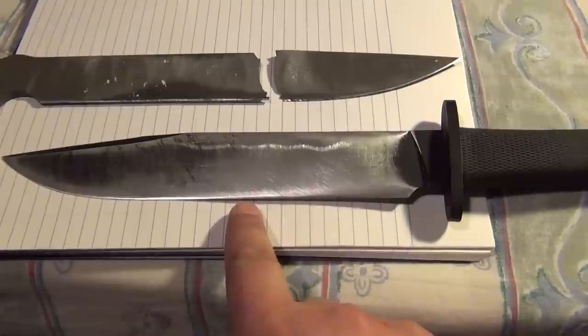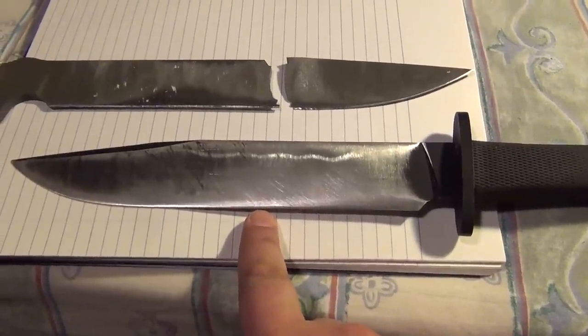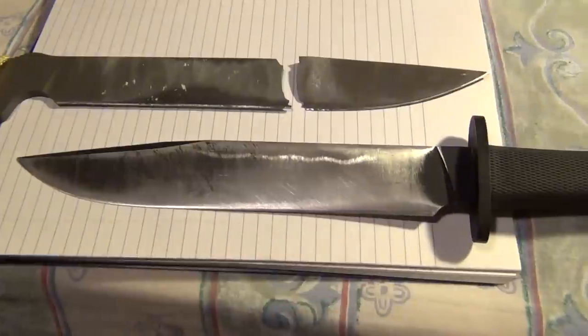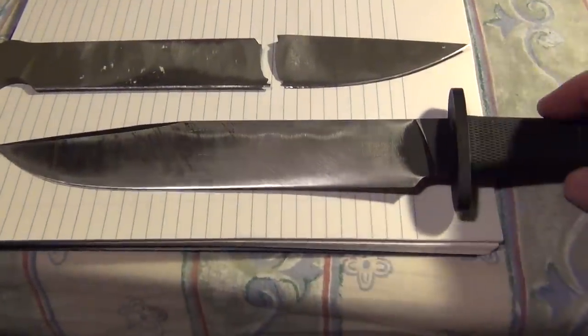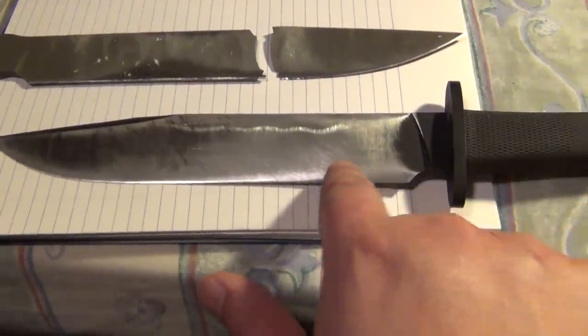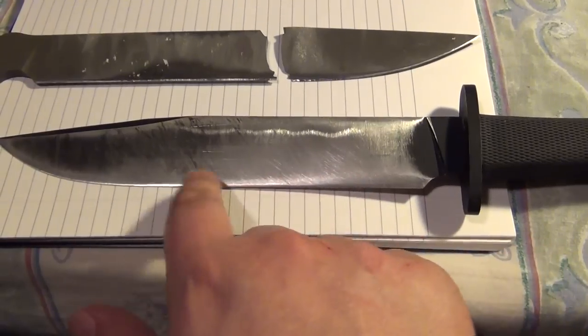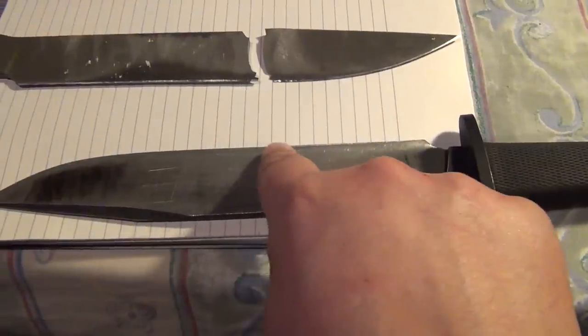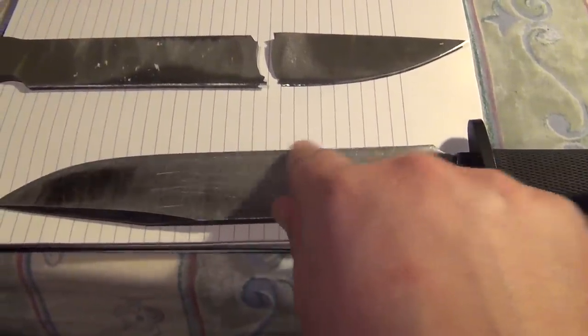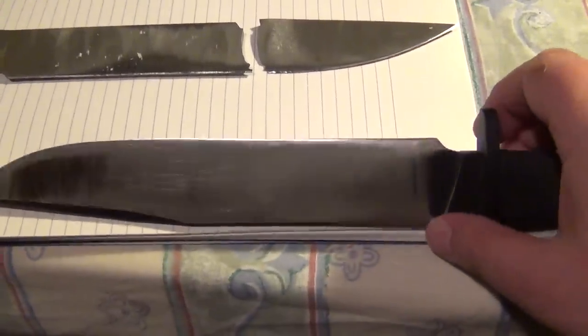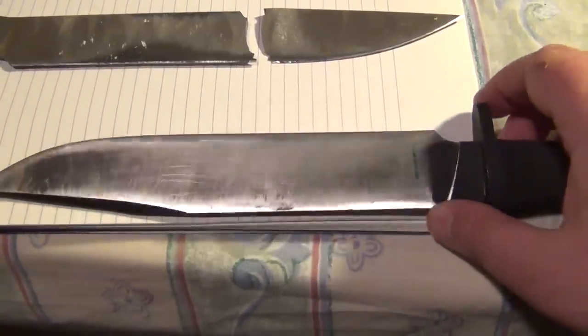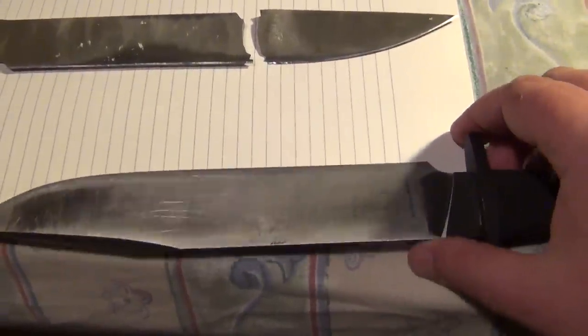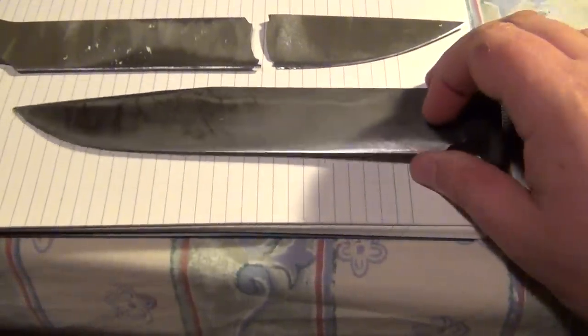The edge on this came significantly thinner than the edge on the Hoodlum, and as you can see, I've flattened it a lot back into the primary grind, reducing the secondary edge bevel angle and reducing its thickness significantly. And it's still in one piece. Still absolutely fine, no issues whatsoever.